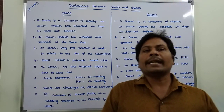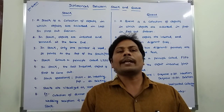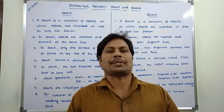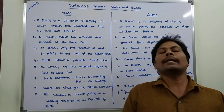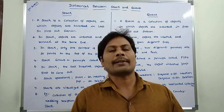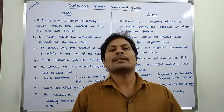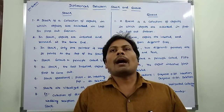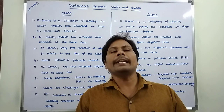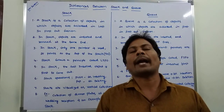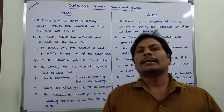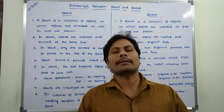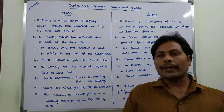In linear data structures, the data or information is stored in the form of linear fashion. But in the case of non-linear data structures, data or information is stored in non-linear form. Examples for linear data structures are stack, queue, and linked list. Examples for non-linear data structures are trees and graphs.